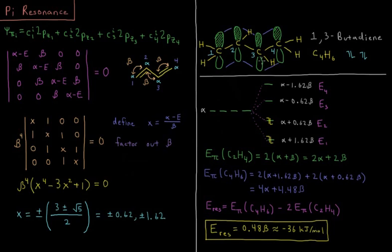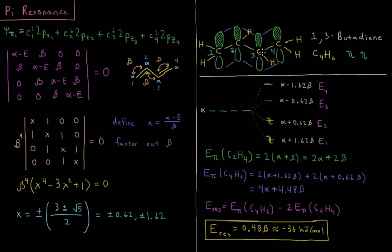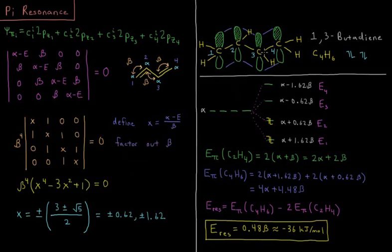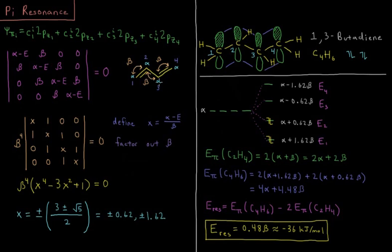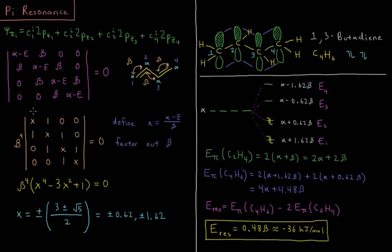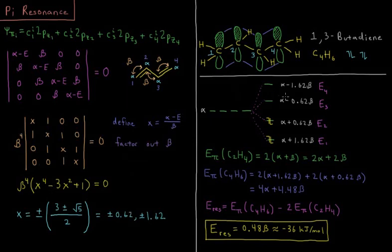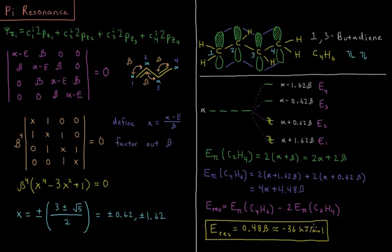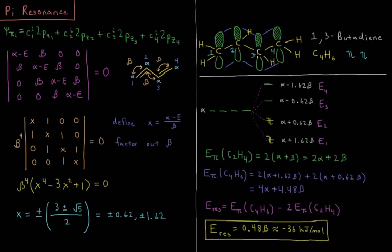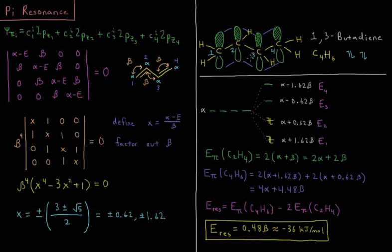Huckel theory actually does a qualitatively reasonable job of predicting the fact that when we have conjugated double bonds here, and we get that extra coupling element between 2 and 3, between our adjacent carbon atoms, that puts an extra coupling element in our determinant. That affects the final energies of our diagram. Our bonding orbitals get lower in energy, and that extra energy is the resonance energy of our molecule, pushing us down lower in energy due to the favorable overlap of these conjugated pi bonds, which are next door to one another.